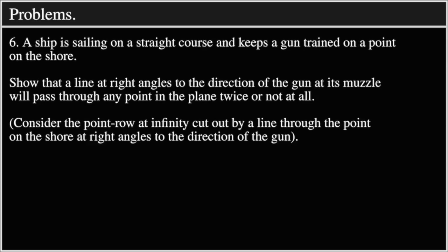Problem 6: A ship is sailing on a straight course and keeps a gun trained on a point on the shore. Show that a line at right angles to the direction of the gun at its muzzle will pass through any point in the plane twice or not at all.